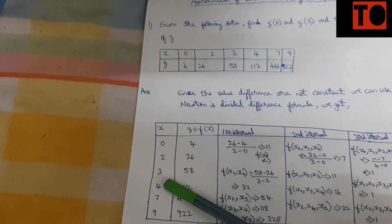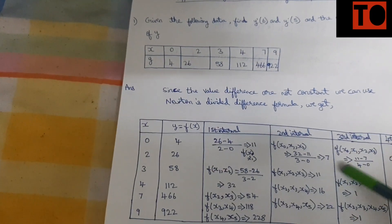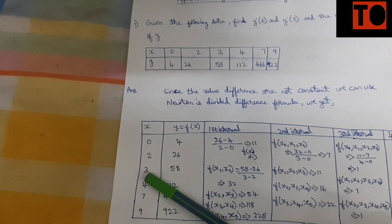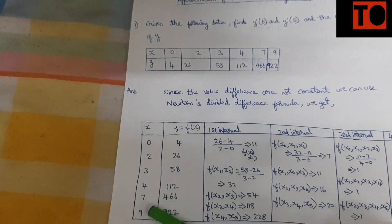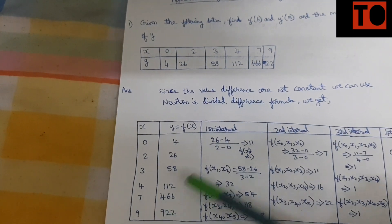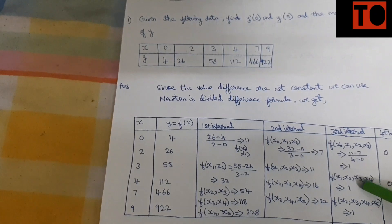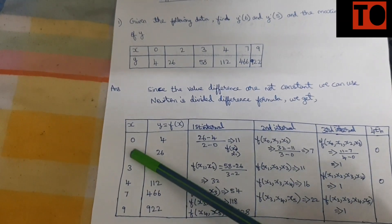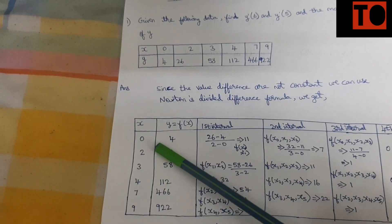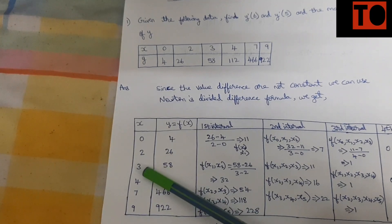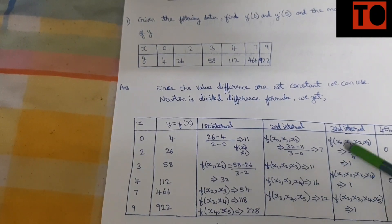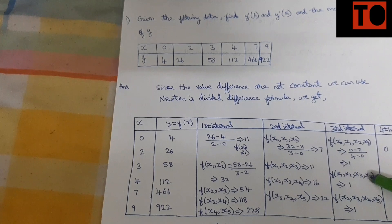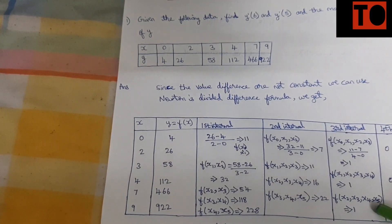Continuing the table: replace pairs such as 0 and 4, giving 4 minus 0; then 2 minus 7; then 7 minus 2; then 1 minus 3; then 4 minus 4. For the third interval, compute 3 minus 0, 4 minus 2, and 3 minus 3. In the numerator: 11 minus 7, 16 minus 11, 22 minus 16, then substitute the third interval values.